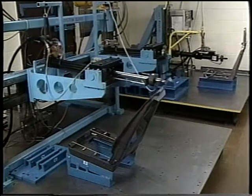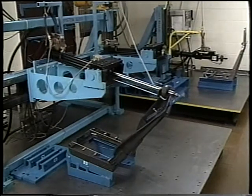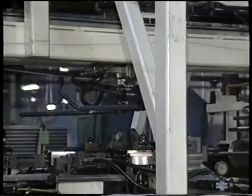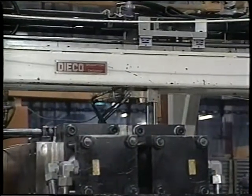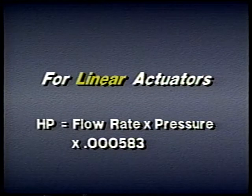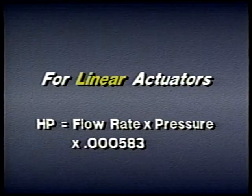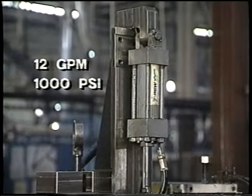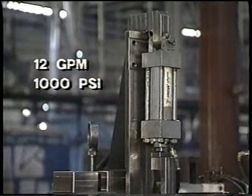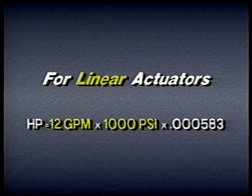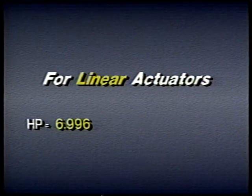Sometimes we don't know the speed or the force — for example, suppose all we know is the pressure and the flow rate. We can use a simplified formula that uses a special constant to establish the relationship of horsepower, pressure, and flow rate. The simplified formula for horsepower of a linear actuator is: flow rate in GPM times pressure in PSI times the constant .000583. For example, a cylinder taking 12 gallons per minute at 1,000 PSI: 12 times 1,000 times .000583 equals approximately 7 horsepower.